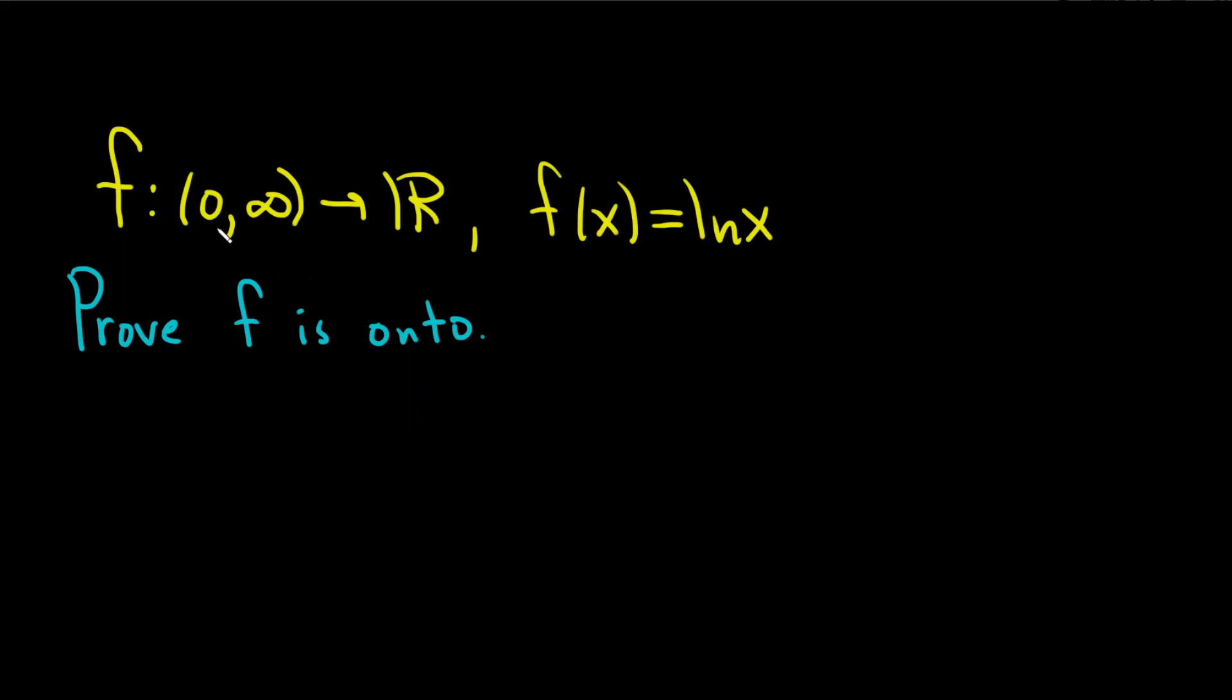So we have the function defined from the set of positive numbers into the real numbers by f(x) equals ln x, and we're going to prove that this function is onto.